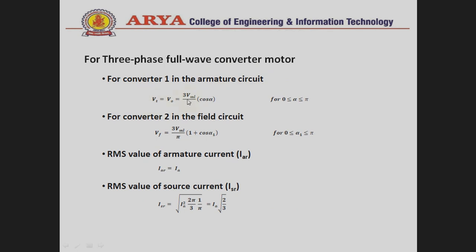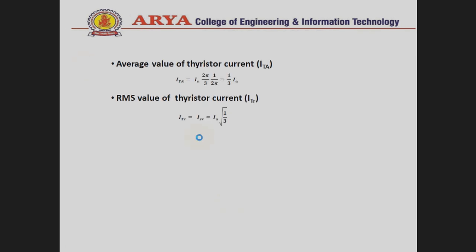For the three-phase full wave converter motor, the armature voltage is Vt = Vout = (3·VmL / π)·cos(alpha). For the field circuit converter, Vf = (3·VmL / π)·(1 + cos(alpha1)). These are the key voltage equations for the full converter on both the armature and field sides.